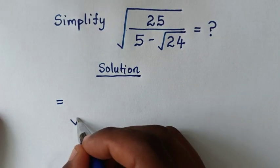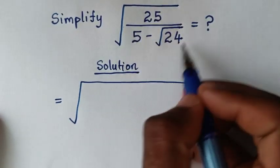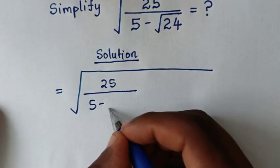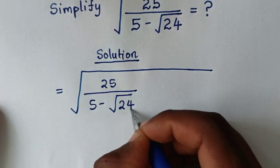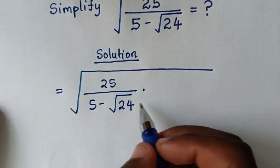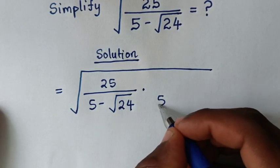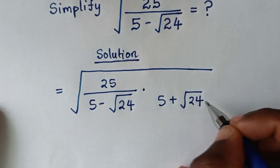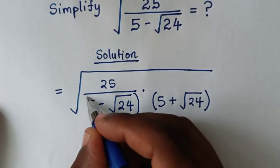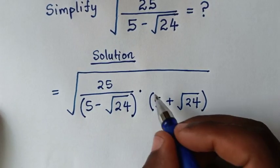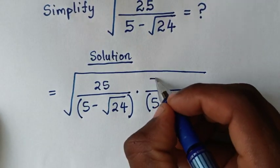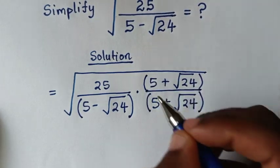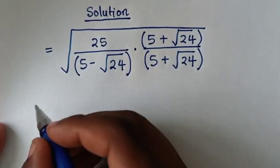So it will be equal to square root of 25 over (5 minus square root of 24). To rationalize the denominator, we multiply by the conjugate. Since we have (5 minus square root of 24), we multiply by (5 plus square root of 24) in both the numerator and denominator.